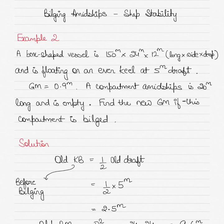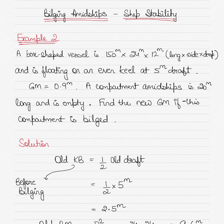This is example two in the topic of ship stability, particularly we are going to talk about bilging of vessels and bilging of midship compartments. This is the second example in this topic. Please make sure you see my previous example because that discusses the theory as well and how the formula has been derived for such calculations.